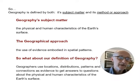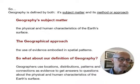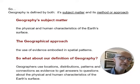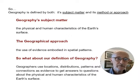If you want to come up with a definition of geography that combines those together, you could say: geographers use locations, distributions, patterns, and connections as evidence to get answers to questions about the physical and human characteristics of the Earth's surface. So the physical and human characteristics are the subject matter, and the use of geographical evidence or geographical data is the method or approach.